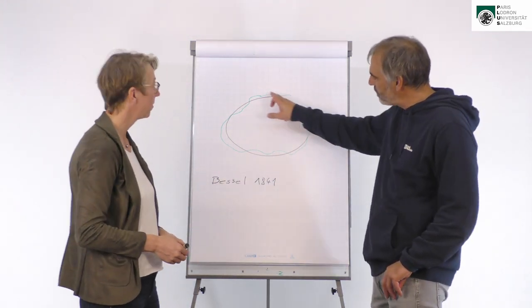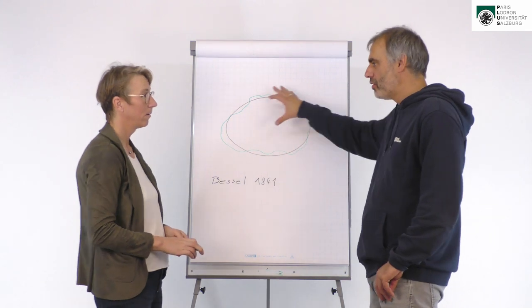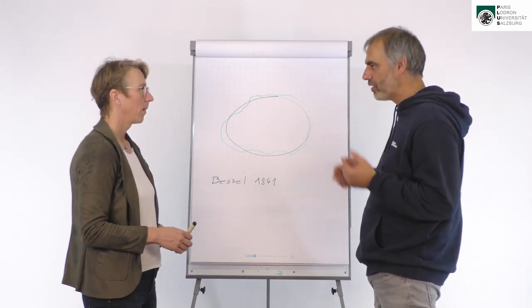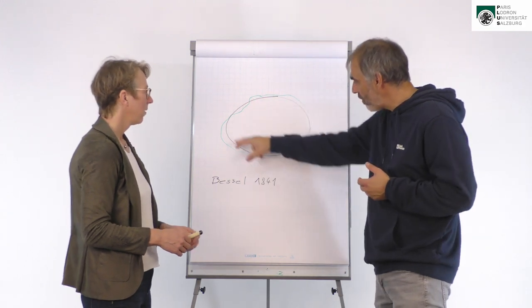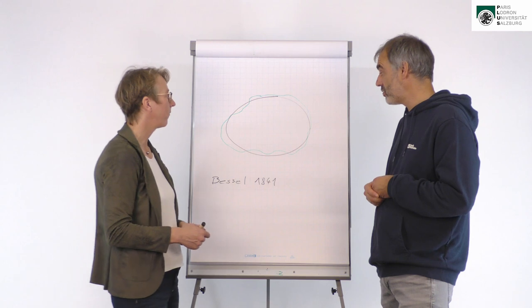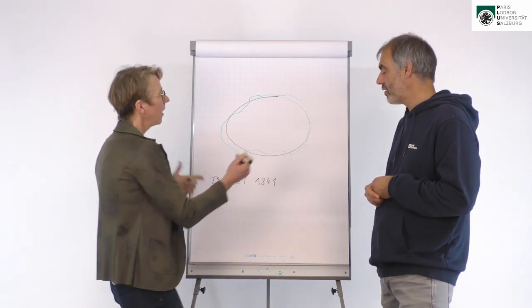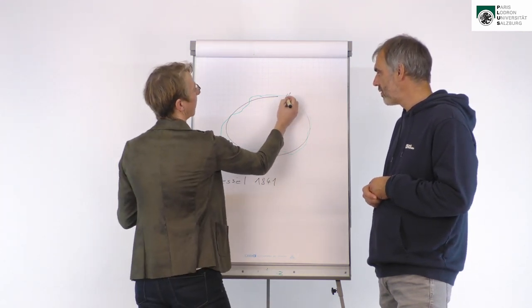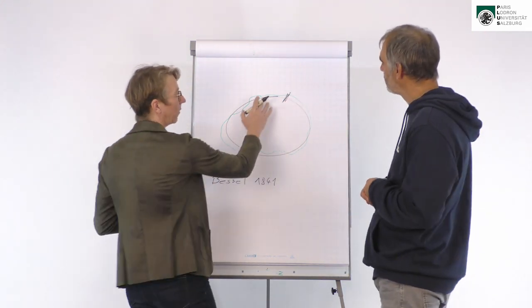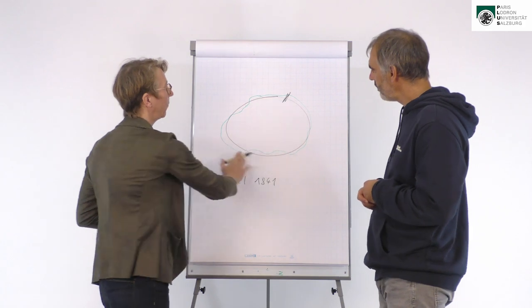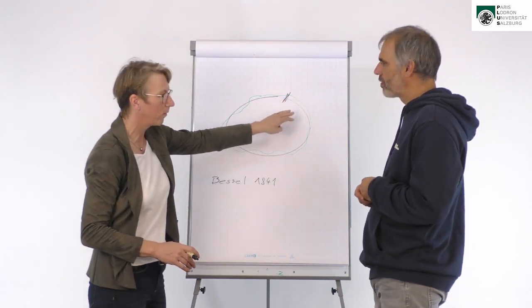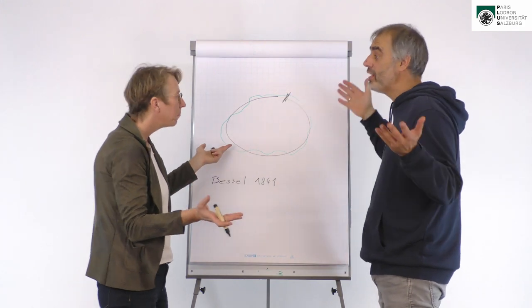And it was a pretty good guess of the real ellipsoid, of the real earth surface model. Given that this was in the 1800s, it was a phenomenal approximation of the shape of the earth. And what they did is they tied it to a specific place. So they wanted to fit that ellipsoid to fit with the earth surface at the local area where they needed it.